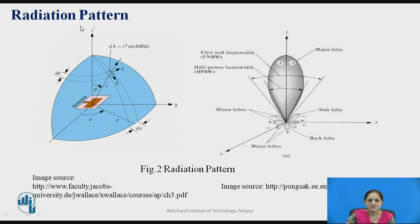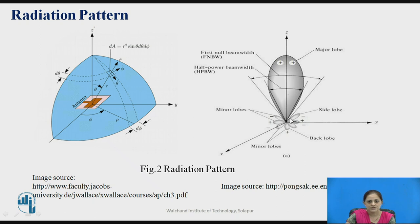When the radiation pattern is drawn graphically, the field strength is along the z-axis, giving the major lobe. There are also side lobes and a back lobe, which are known as minor lobes because their values are less compared to the z-axis major lobe. The back lobe is exactly opposite to the front lobe. To calculate the beam width, consider the minus 3 dB value of the maximum value at the major lobe and measure that angle as the beam width.